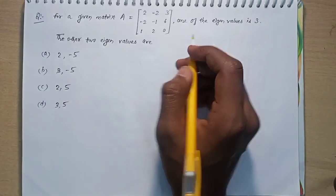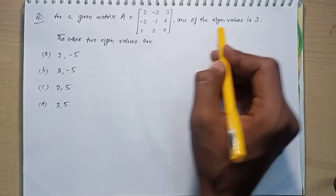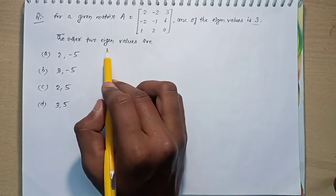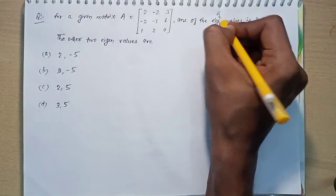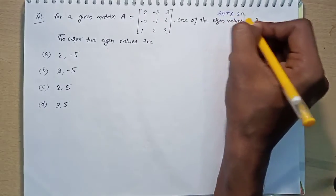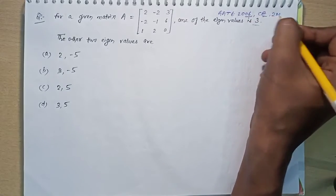For a given matrix A, one of the eigenvalues is given and we have to find the other two eigenvalues. This question was asked in Gate 2006 in civil for two marks.